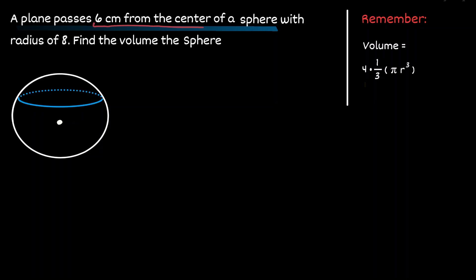So if this is six centimeters from the center of the sphere, then we draw a perpendicular line from the plane to the center of the sphere — that will be equivalent to six. We also know that the sphere has a radius of eight, which is the length from the center to any point on the circumference. We are going to choose the point that intersects with the plane. This is the radius of the sphere, which has a value of eight. Notice that we can create a right triangle, where the missing side is the radius of the plane, which is the unknown we are looking for.